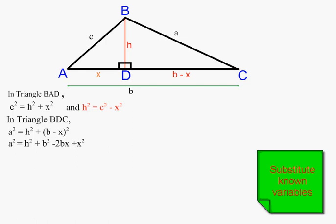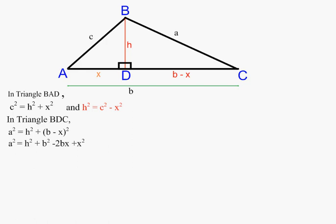From the first work we did on BAD, we had h squared being c squared minus x squared, so we're going to replace that h squared with c squared minus x squared into our new equation. We're starting to get all of the units being a's, b's, and c's.